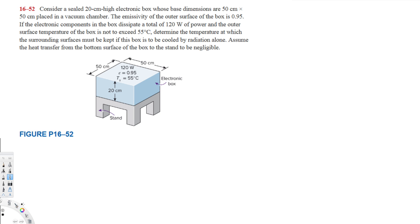Consider a sealed 20 centimeter high electronic box whose base dimensions are 50 by 50 centimeters, placed in a vacuum chamber. The emissivity of the outer surface of the box is 0.95, and the electronic components in the box dissipate a total of 120 watts of power. The outer surface temperature of the box is not to exceed 55 degrees Celsius. Determine the temperature at which the surrounding surface must be kept if this box is to be cooled by radiation alone.